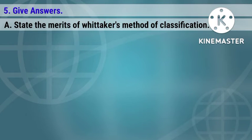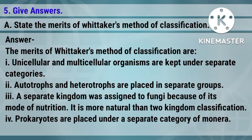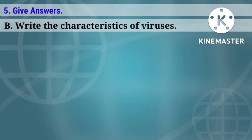Question five, part a: state the merits of Whittaker's method of classification. The merits are: unicellular and multicellular organisms are kept under separate categories; autotrophs and heterotrophs are placed in separate groups; a separate kingdom was assigned to fungi because of its mode of nutrition, making it more natural than two-kingdom classification; and prokaryotes are placed under a separate category of Monera.